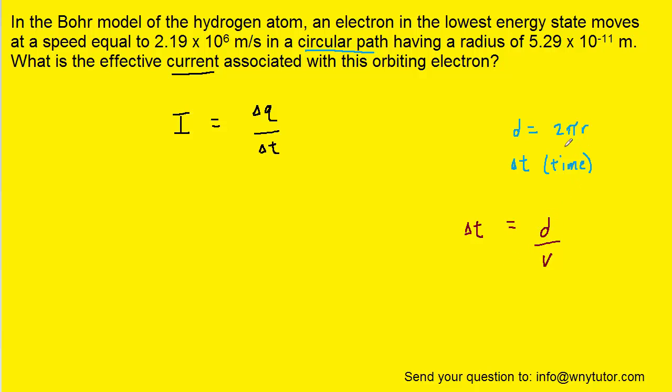Now recall that the distance the electron was traveling was around that circular path and it was given by 2 pi r. So we're going to replace the distance d with the expression 2 pi r.